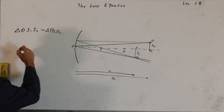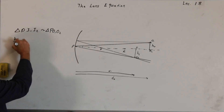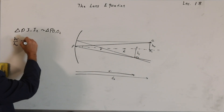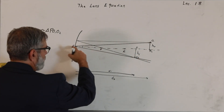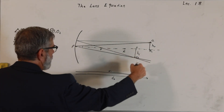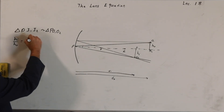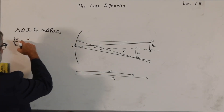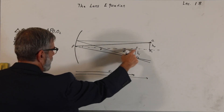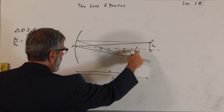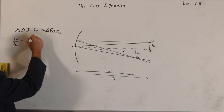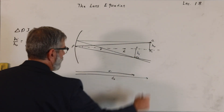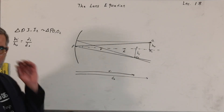From those similar triangles, hi over ho — this distance over this distance — will be the same as the distance from P to I1, which we call d_i (the image distance), over the object distance from P to O2, which is d_o. That's useful, but we need to find another triangle.